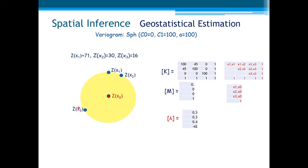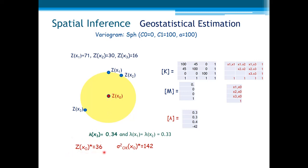The weight of the isolated sample becomes higher than the individual weight of those two clustered samples. And this is precisely the resulting estimate of point x0 here. It is worth noting that the Kriging variance is the highest of the three situations we have seen until now, showing this is the least confident estimate due to this case of clustering.